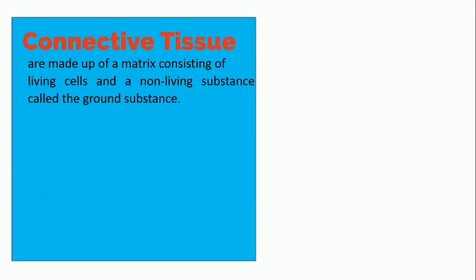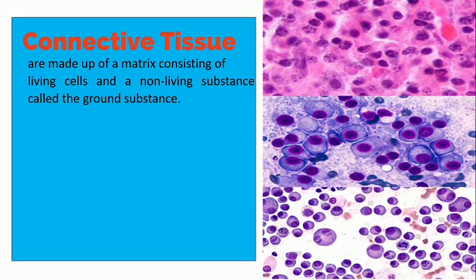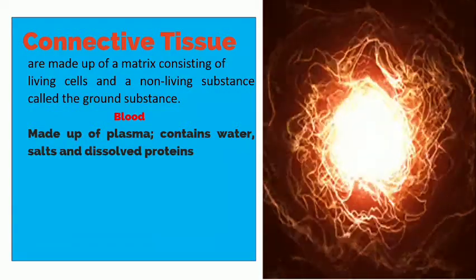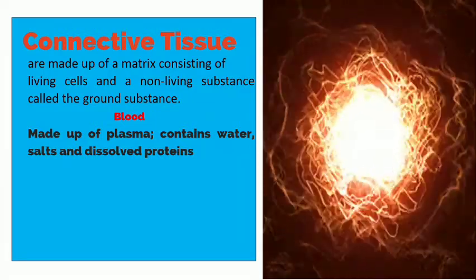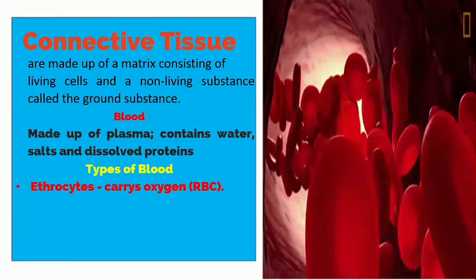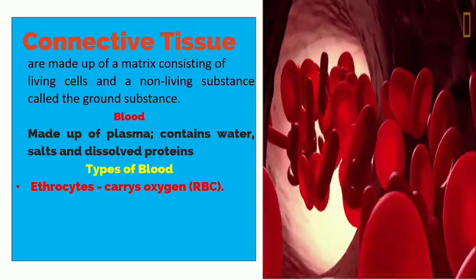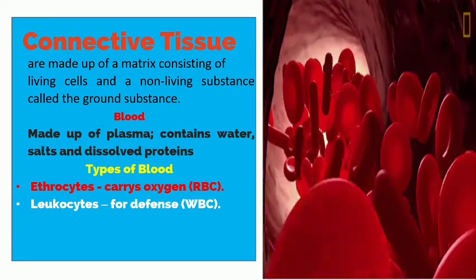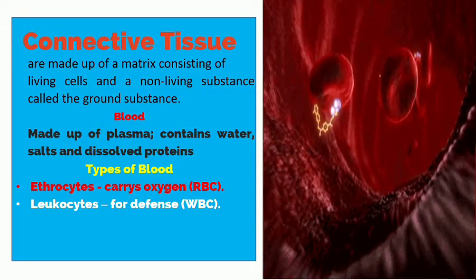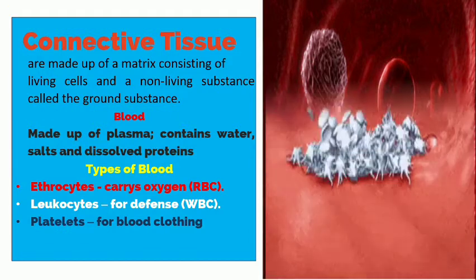Connective tissue is made up of a matrix consisting of living cells and a non-living substance called the ground substance. These tissues include blood, which is made up of plasma containing water, salts, and dissolved proteins. The types of blood cells are: erythrocytes, which carry oxygen, also known as red blood cells; leucocytes, which are for defense, also known as white blood cells; and platelets, which are for blood clotting.